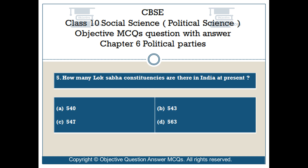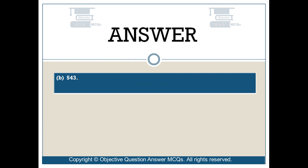Question number 5. How many Lok Sabha constituencies are there in India at present? Option A: 540. Option B: 543. Option C: 547. Option D: 563. The right answer is Option B: 543 Lok Sabha constituencies.